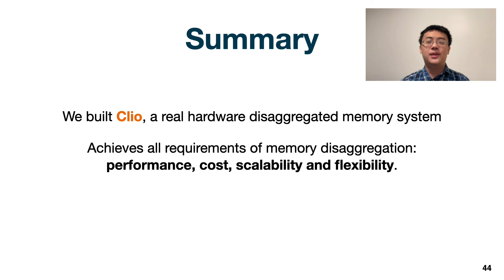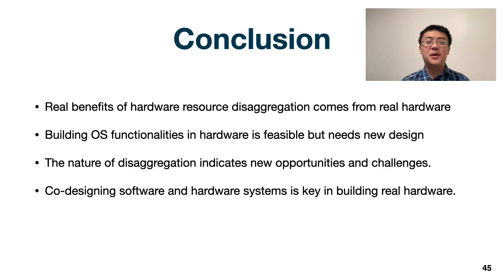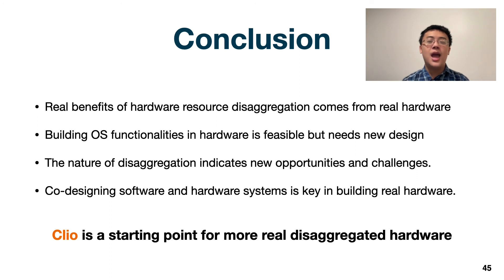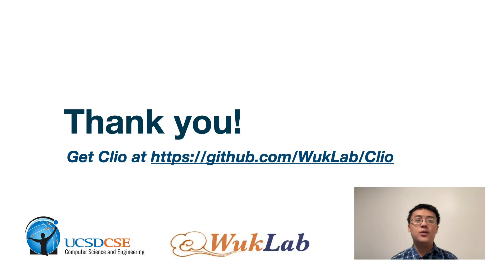In summary, we built Clio, a real hardware disaggregated memory system. Clio achieves all the requirements of memory disaggregation — including performance, cost, scalability, and flexibility. From the experience of building Clio, we can see that building real hardware is both feasible and beneficial to applications. The nature of disaggregation proposes new opportunities and challenges, and we realize that co-designing software and hardware systems is a key method to solve these challenges. We hope Clio can be a starting point and inspire more explorations on real disaggregated hardware systems. Please get Clio from our GitHub repo. Thanks for listening!